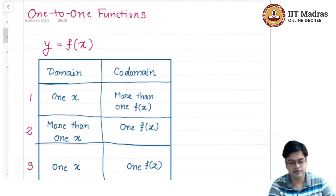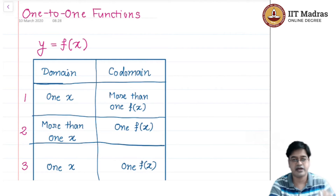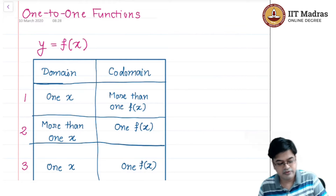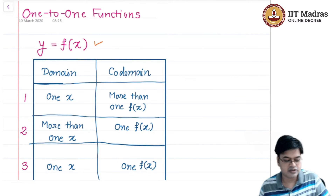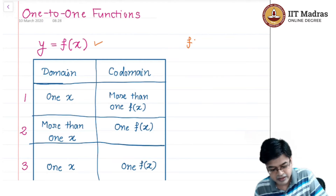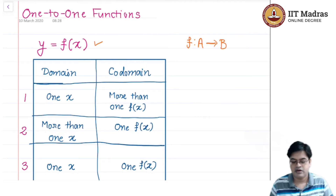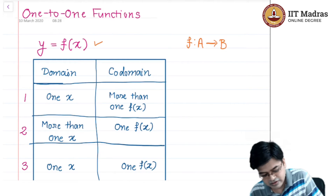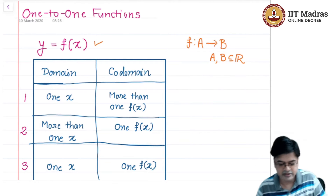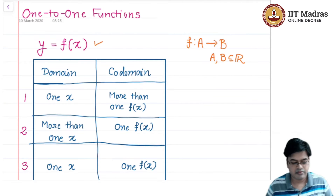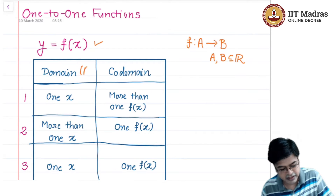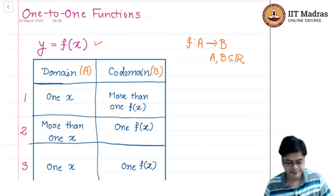First let us go to the concept of one-to-one function. In order to define it, let us quickly recall the concept of a function. Whenever I talk about a function, I will talk about y equals f of x. This function f needs some domain — let us say A — and some codomain. For us, let A and B be subsets of the real line, so that we can understand things in terms of the coordinate plane. So my domain is A and codomain is B.